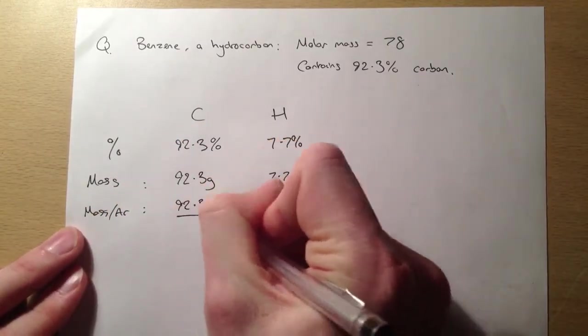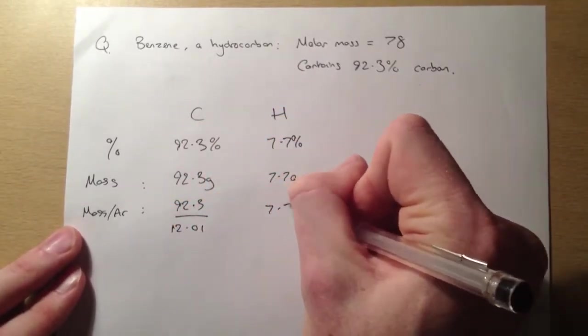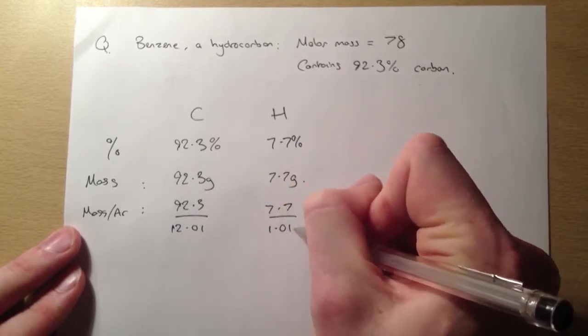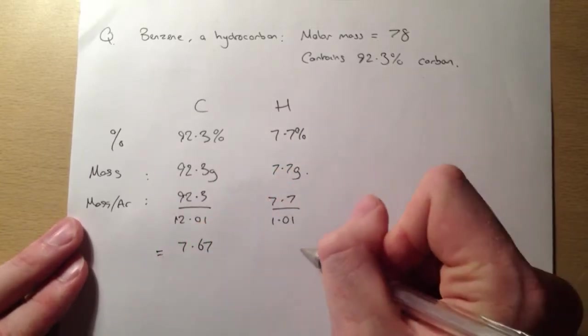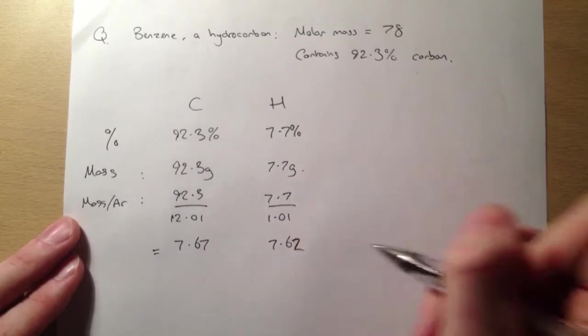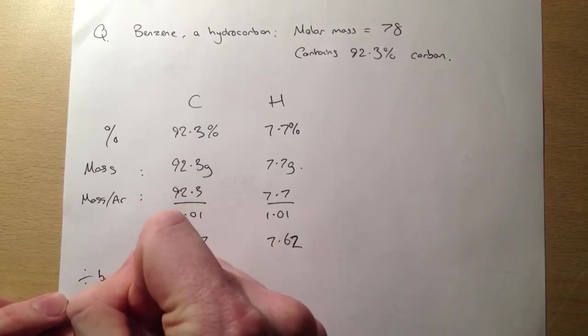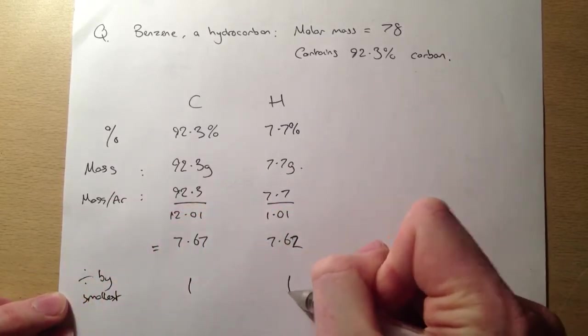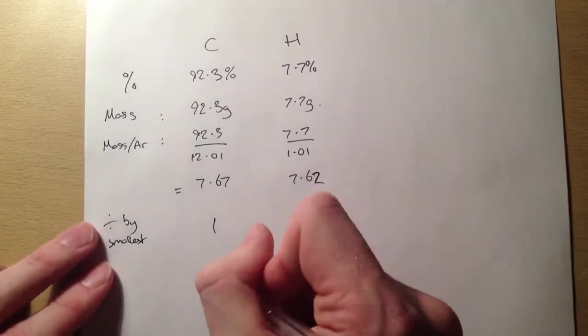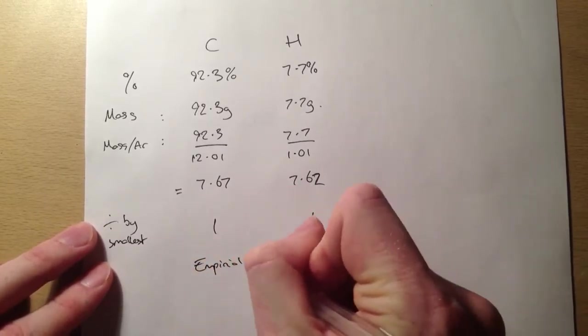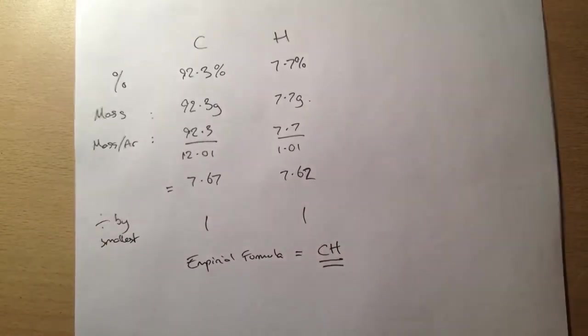So we're going to do the mass divided by the relative atomic mass. So that's going to be 92.3 divided by carbon, which is 12.01, and 7.7 grams divided by hydrogen, which is 1.01. So if we do that, we get 7.67 and 7.62. Now, you can see that those are more or less identical. So when we divide by the smallest, we're going to get 1 and 1. Technically, this one is the smallest, but that's the ratio we've got. So 1 to 1. So that must mean that the empirical formula of benzene is going to be CH. That's our empirical formula.